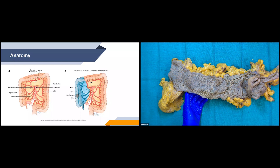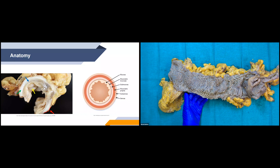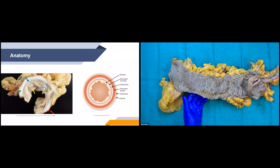Another important aspect to discuss about the anatomy of the bowel is the different layers of the bowel. This is going to come into really high importance when we're talking about staging later on. Going outside in, it starts with first the serosa, then the subserosa, then muscularis propria, then the submucosa, then our muscularis mucosa, and then our mucosa as the most inner layer. Each layer is shown with colored arrows on the specimen diagram.